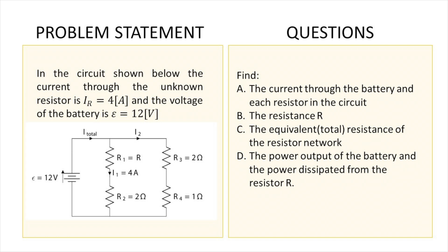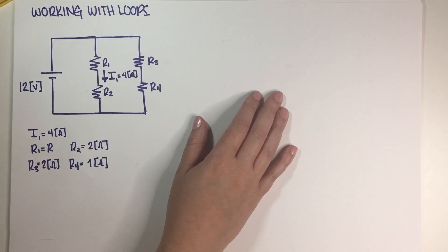So this is the circuit we're gonna be working with today. We have a circuit with two branches and four resistors, and we know the value of one of the currents and three out of four resistors. We have to find all of the currents in the circuit, the resistance we were not given, the equivalent resistance of all the resistors combined, and the power output of the battery and the power dissipated from resistor R.